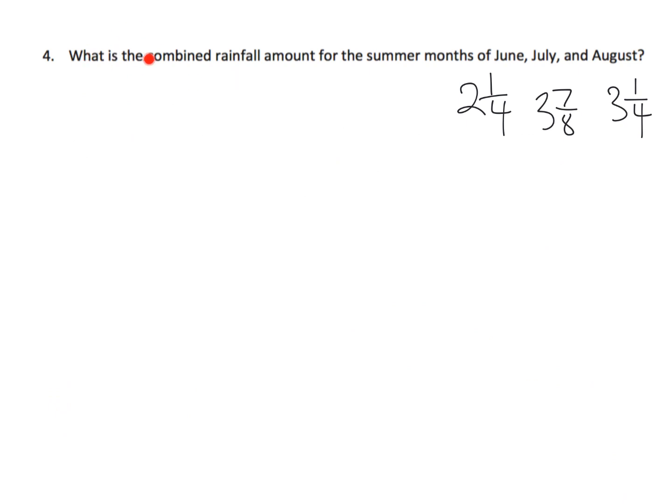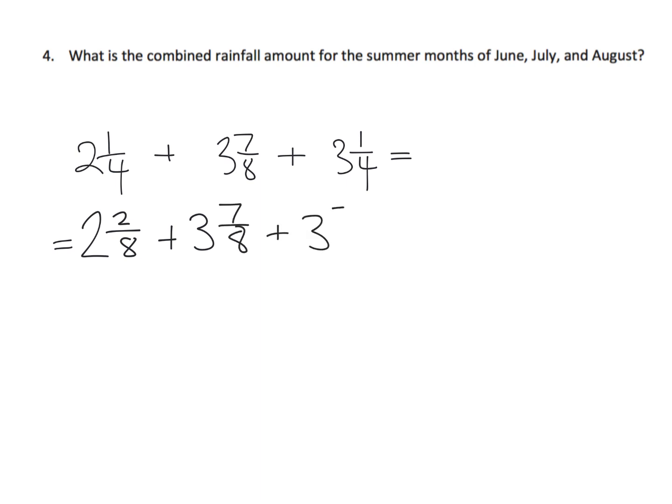So here, what is the combined rainfall amount for the summer months of June, July, and August? And I've already written our values here. So here's June, here's July, and here's August. And of course, we're being asked to add them. So one way we could do this is we can first, oh, you know what, let's first think of all of these with like denominators. Actually, there's another way we could do this. Well, a couple of ways. That's the beauty of math. I love math because there's so many different ways we can solve this. So let's start by renaming two and a quarter to two and two-eighths, plus three and seven-eighths, plus three and two-eighths.